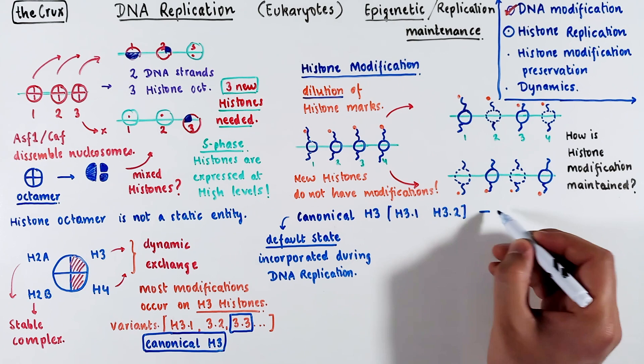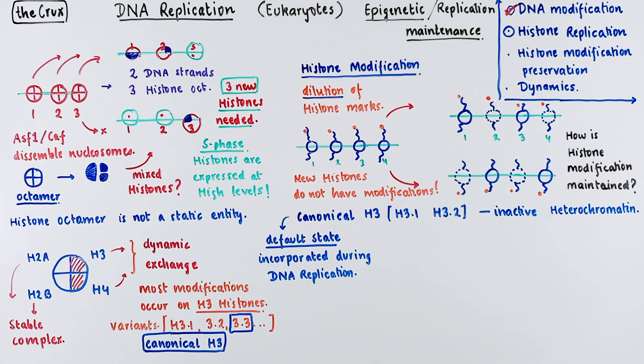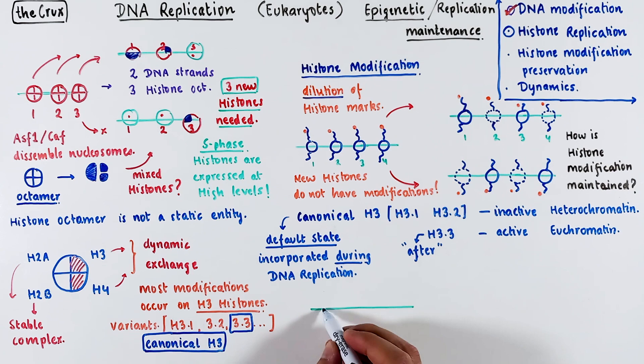And these canonical histones are inactive by default. Which means that places where H3 histones go become specifically heterochromatin. On the other hand, H3.3 is typically associated with an active mark. But that does not mean it is always active. In contrast to the canonical H3 histones, 3.3 is installed after the DNA replication is completed. Let's understand this difference in a bit more detail.